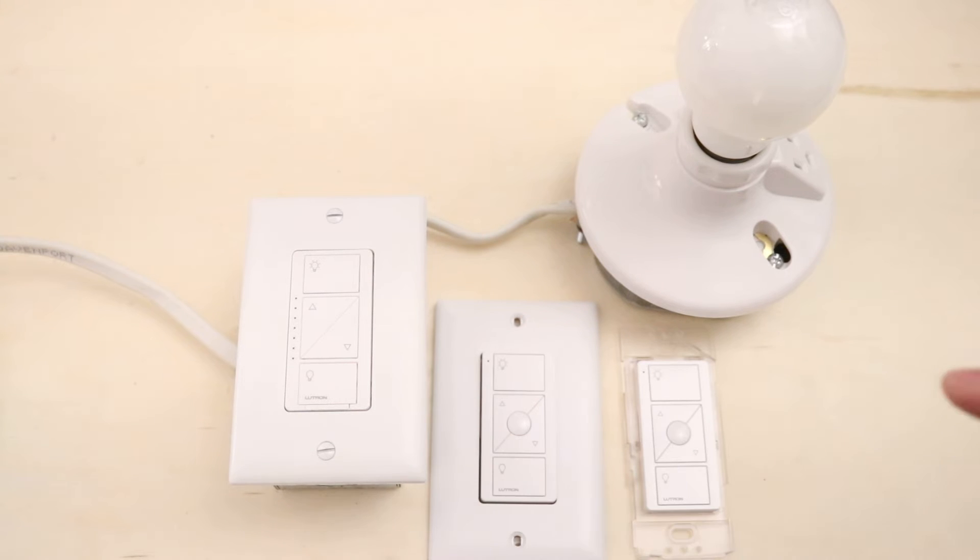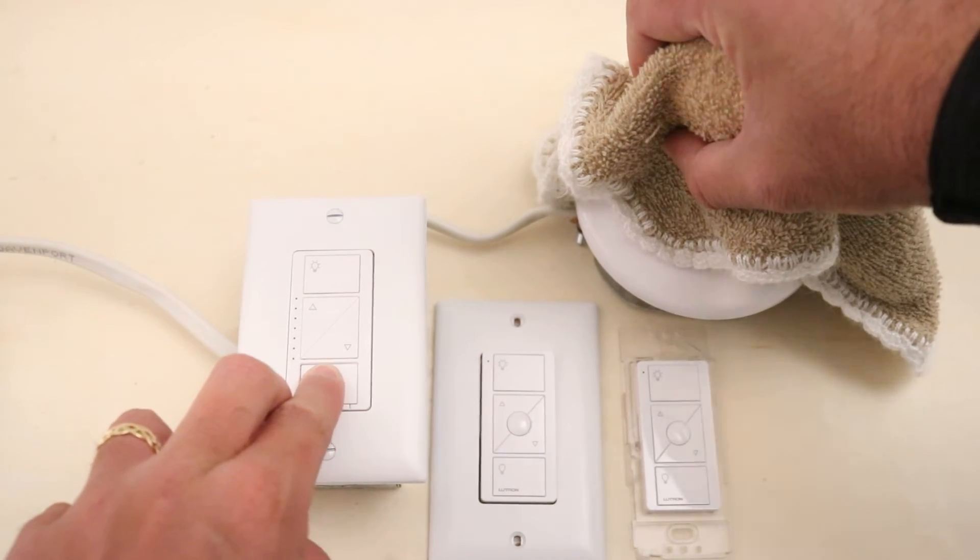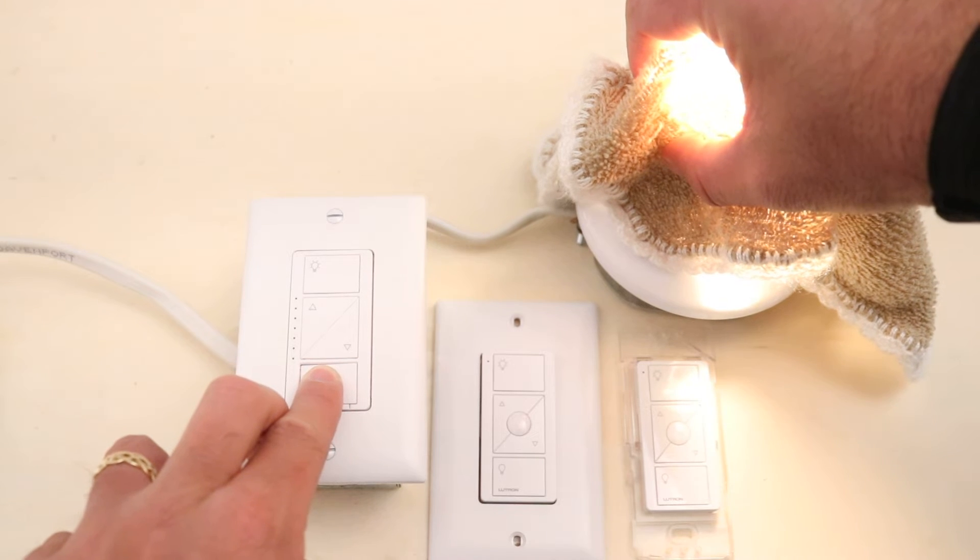We click on the dimmer switch to put it in pairing mode. Hold that down for six seconds. I'm going to cover up the light because otherwise it will ruin the video.